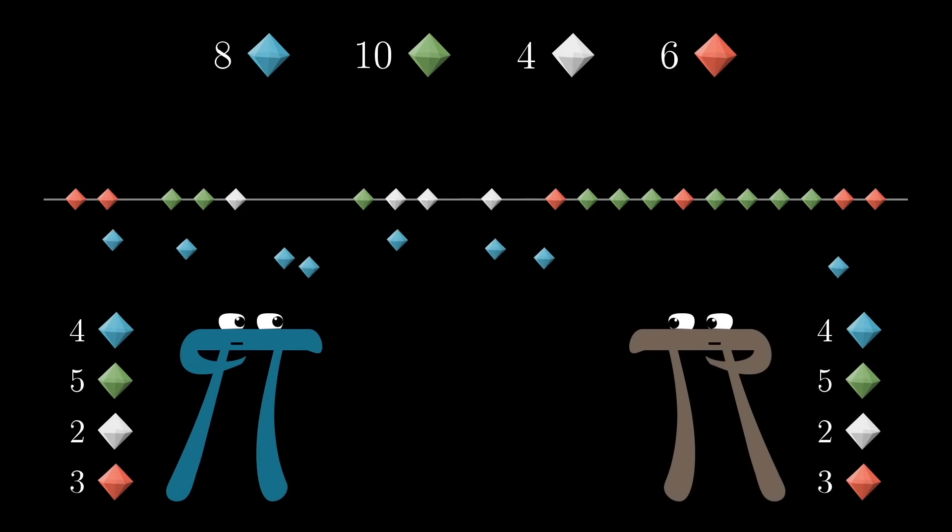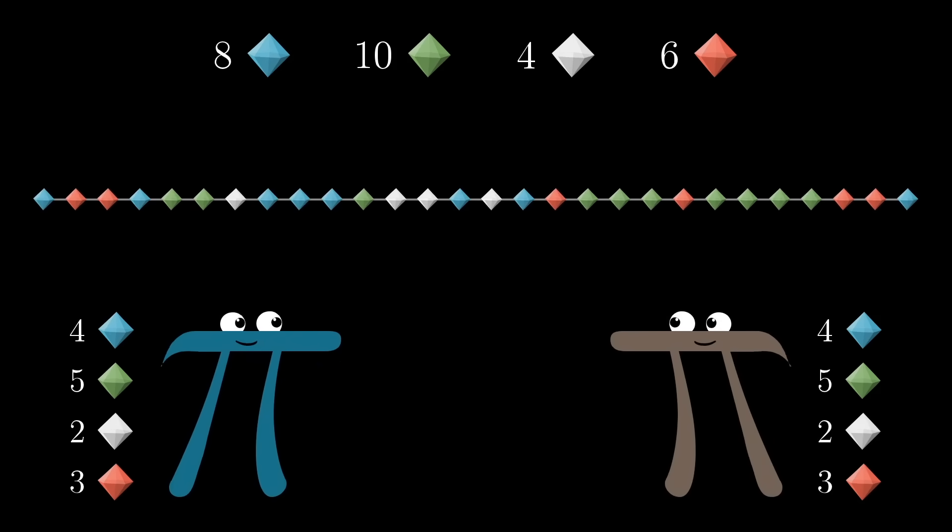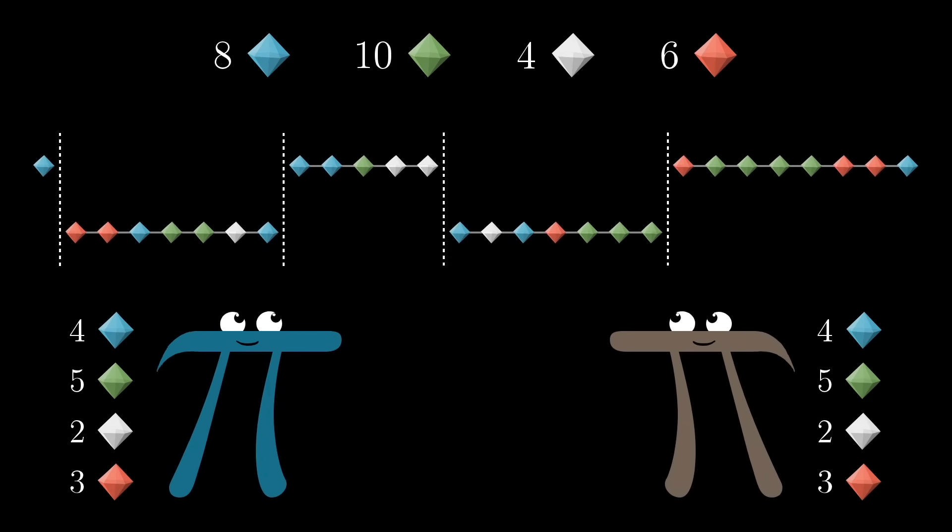Of course, you could just cut off all of the jewels and divvy them up evenly, but that's boring. There's not a puzzle there. Instead, the challenge is to make as few cuts to the necklace as possible so that you can divvy up the resulting segments between you and your co-conspirator, with each of you getting half of each jewel type.